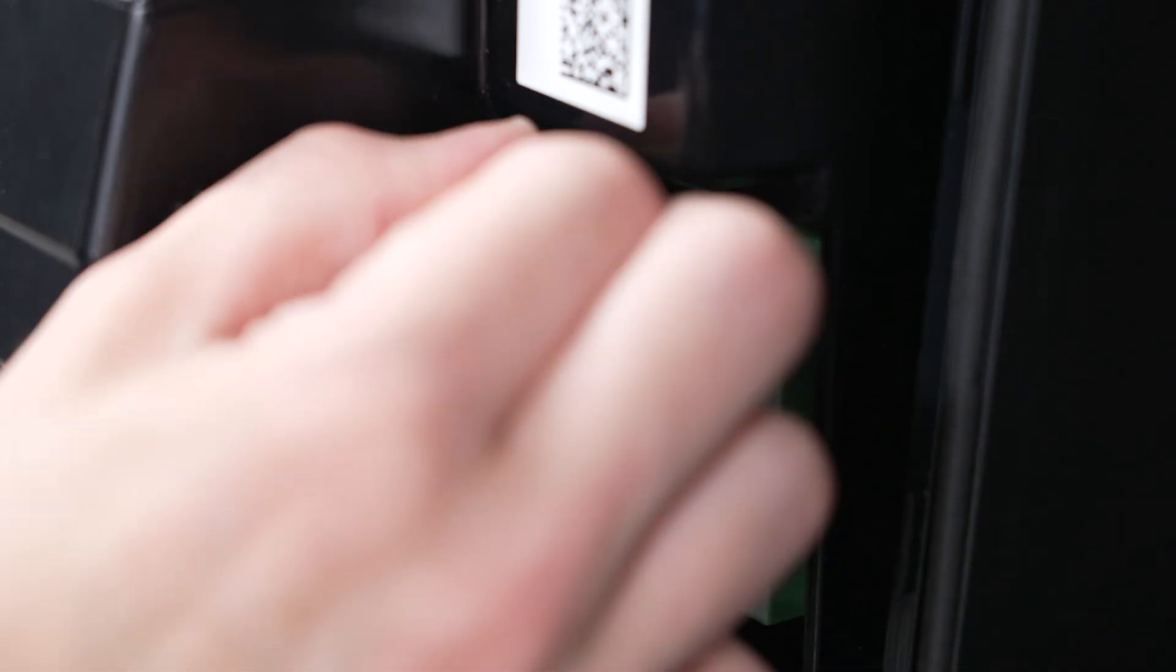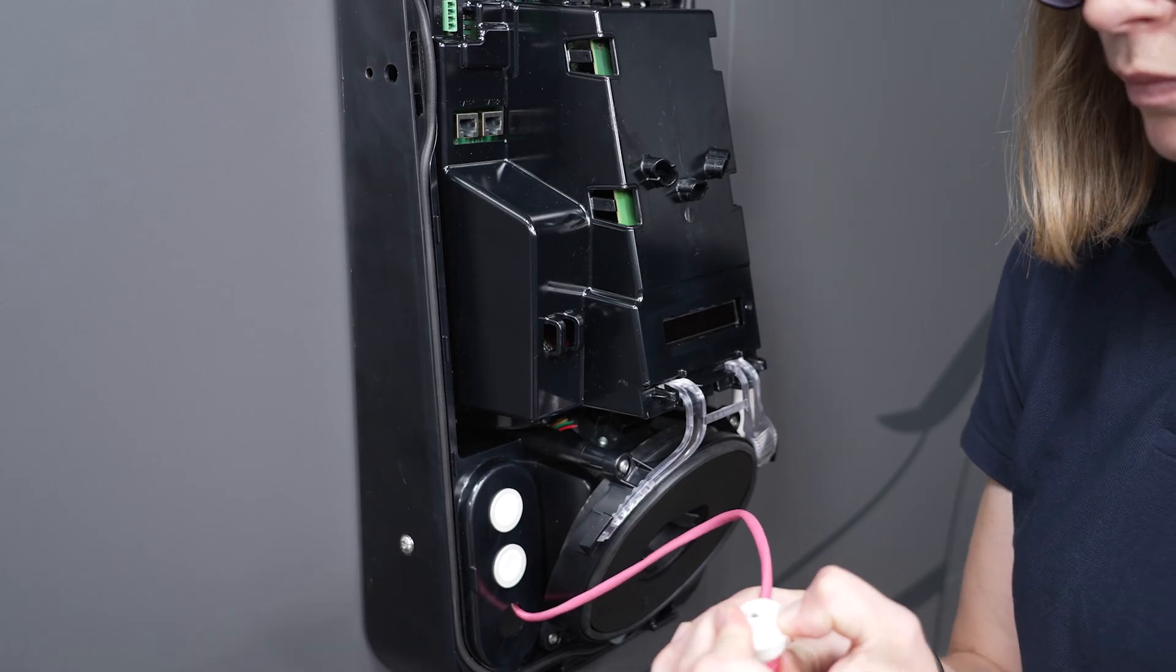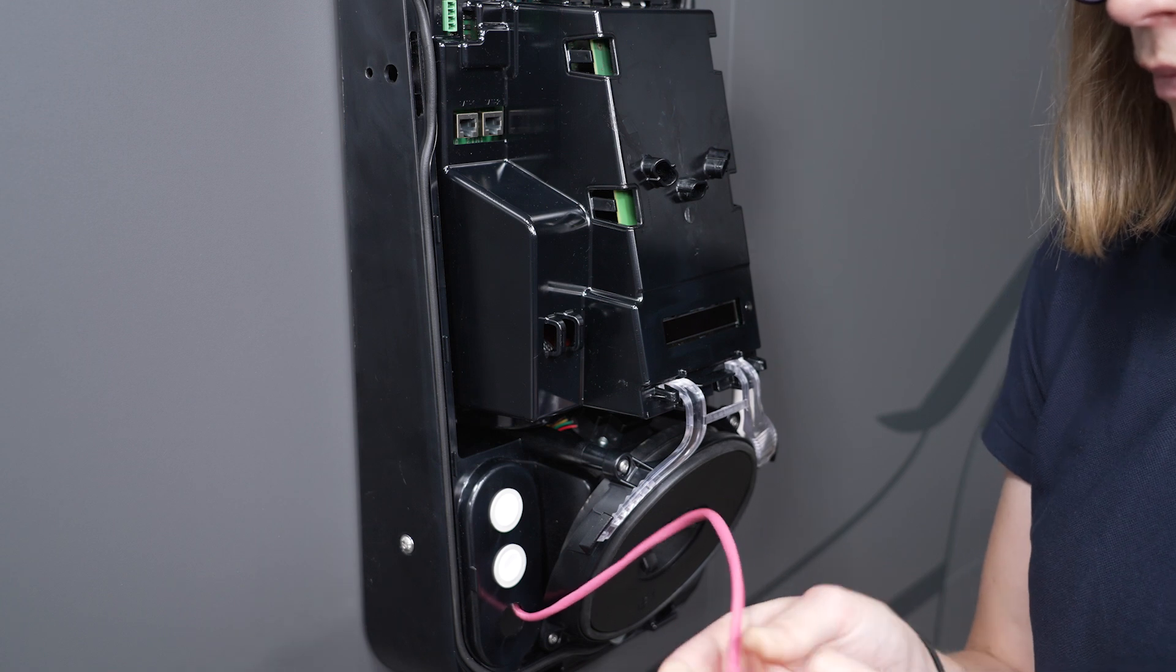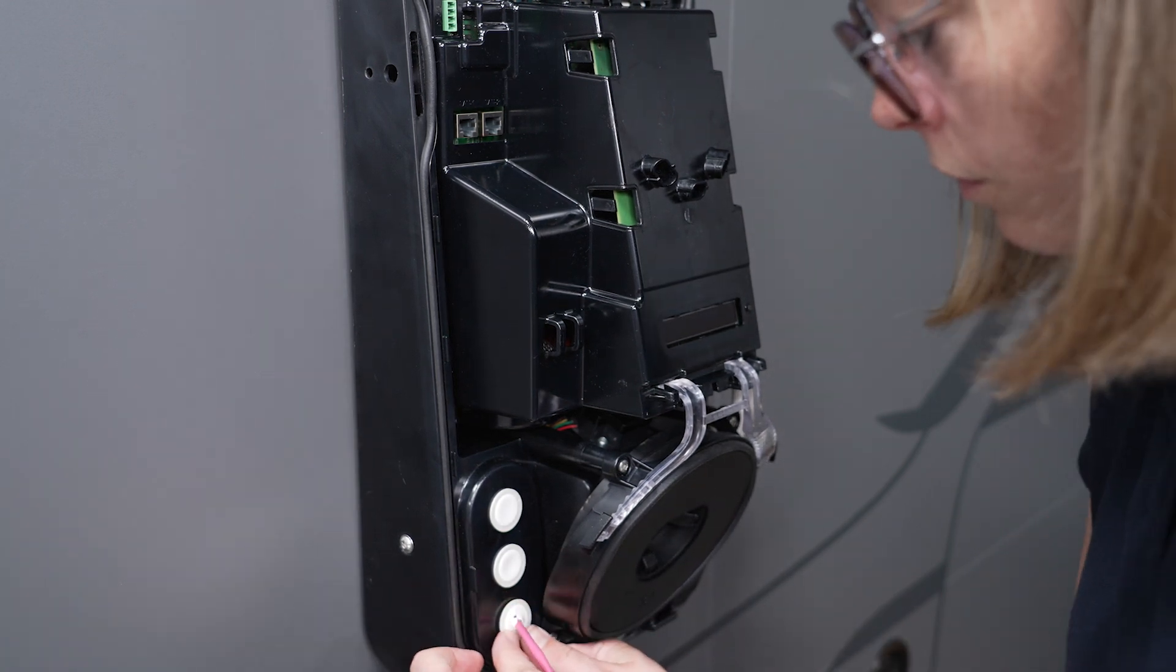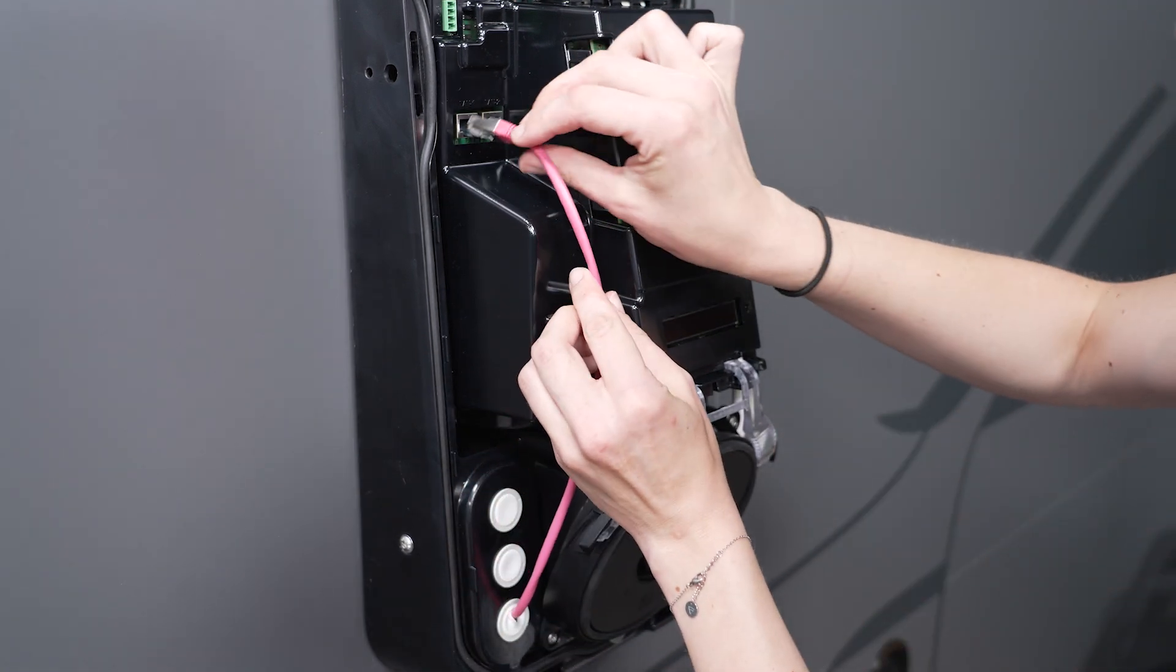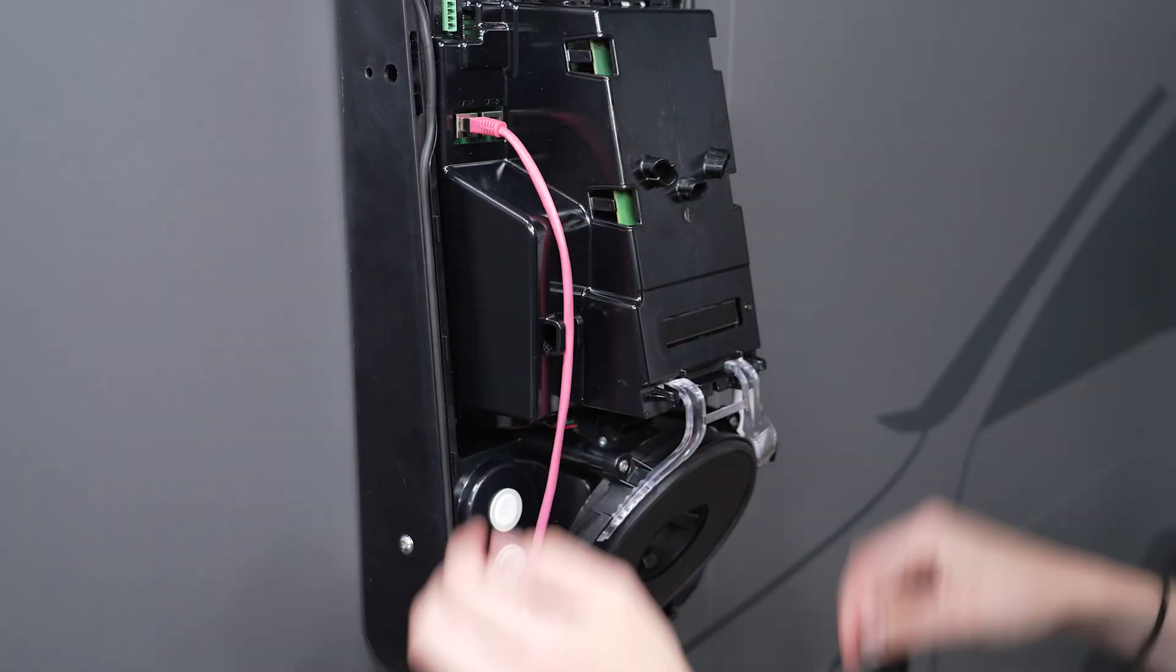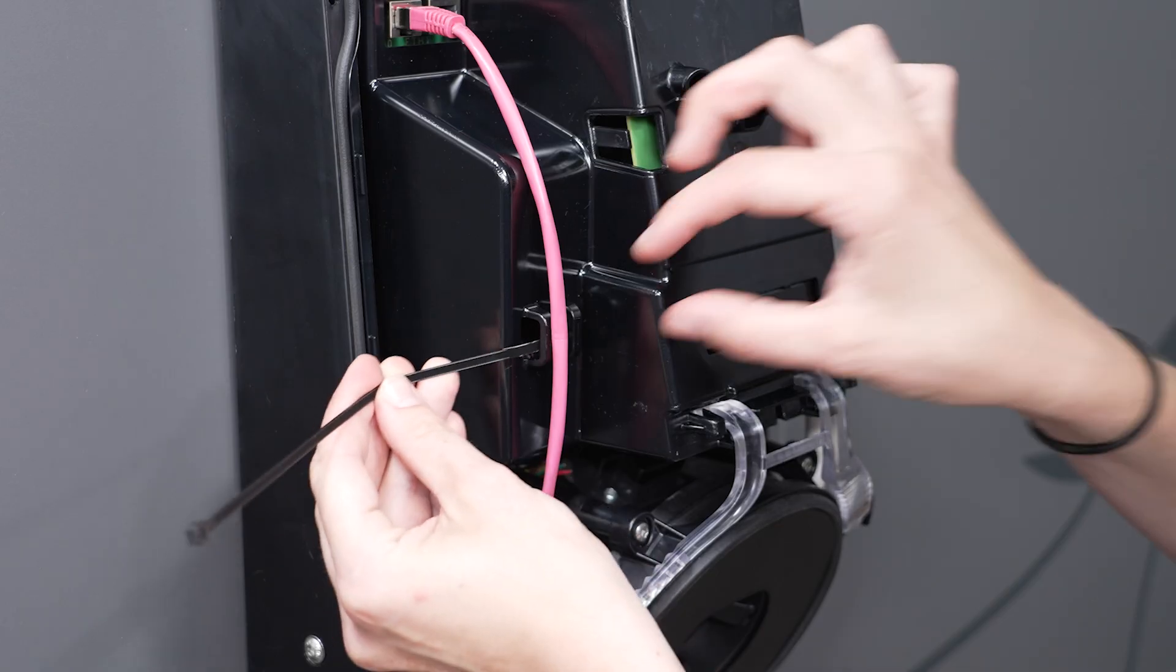I proceed the same way with the communication cables. Guide the seal over the cable. Check that it is correctly seated. Select one of the two LAN ports and finally secure the network cable with a cable tie on one of the two bars as strain relief.